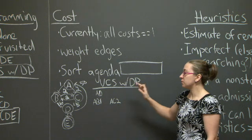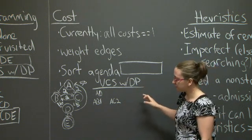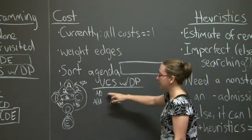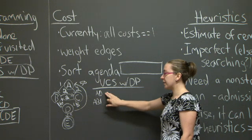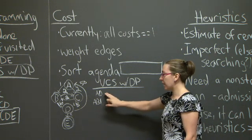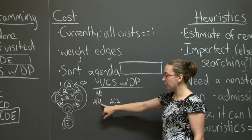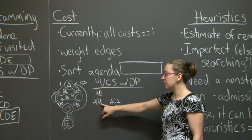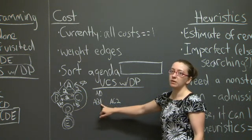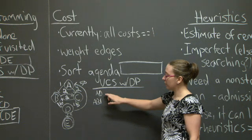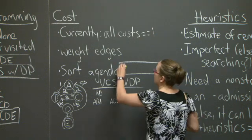Let's look at uniform cost search run with dynamic programming. In my first step, I expand A and add two partial paths to my queue. I'm also going to keep track of the cumulative cost associated with that partial path. When I expand A, I add A to the agenda.